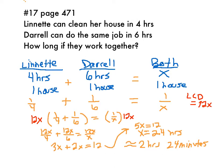Remember, in this problem we need to convert all the information for each person into a rate. And typically we like to have rates with time in the denominator. So you're told that Lynette can clean the house in four hours — four hours to do one house. Daryl can do one house in six hours.